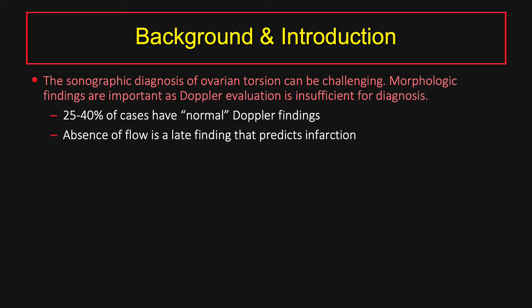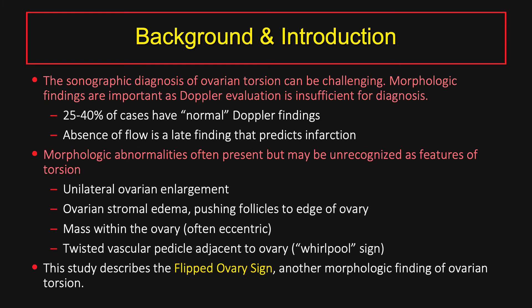The sonographic diagnosis of ovarian torsion can be challenging. Morphologic findings are important as Doppler evaluation is insufficient for diagnosis. 25-40% of cases have normal Doppler findings, and the absence of flow is a late finding that predicts infarction. Morphologic abnormalities often present but may be unrecognized as features of torsion, and these include unilateral ovarian enlargement, ovarian stromal edema which pushes the follicles to the edge of the ovary, a mass within the ovary which is often eccentric and serves as a lead point, and a twisted vascular pedicle adjacent to the ovary, also known as the whirlpool sign.